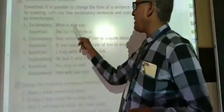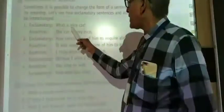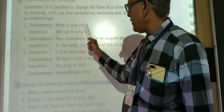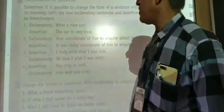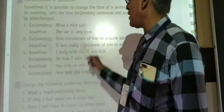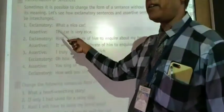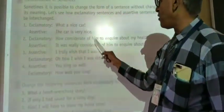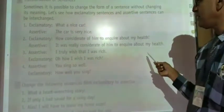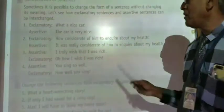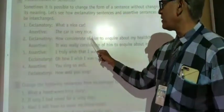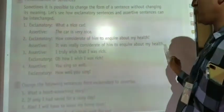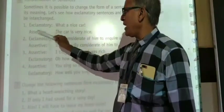Exclamatory example: 'What a nice car.' We will change this into assertive. We start with the subject — the car. So the assertive form is: 'The car is very nice.' We use the same adjective and add 'very.' Next exclamatory example: 'How considerate of him to inquire about my health!' This becomes: 'It was very considerate of him to inquire about my health.' So these are two examples of changing from exclamatory to assertive.